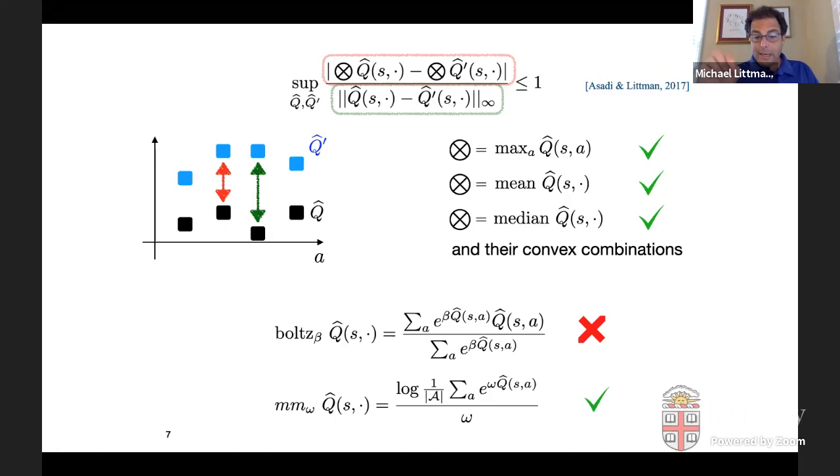We're taking the Q values. We're weighting them by Omega here. Very similar to the Boltzmann case. We're taking E to that, just like the Boltzmann case. We're summing that over all the action, just like the Boltzmann case. But generally in the Boltzmann case at this point, we would then weight that by the Q value and then normalize. But what we're going to do instead is average it one over number of actions. And then take the log of that value and divide by Omega.